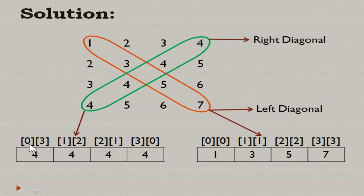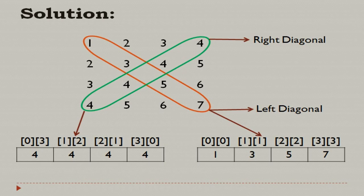For the right diagonal, the row values are increasing — 0, 1, 2, 3 — while the column values are decreasing — 3, 2, 1, 0. You can use a loop with index variable i running from 0 to 3 for the row subscript. For the column, declare a separate variable initialized to 3 and decrease it by 1 each iteration, giving values 3, 2, 1, 0. This way you can easily find all right diagonal elements.